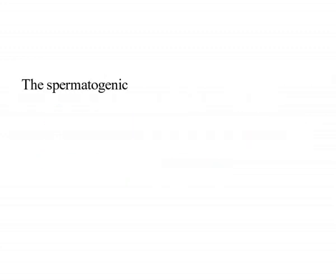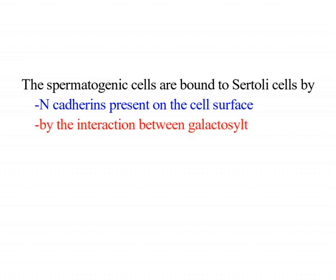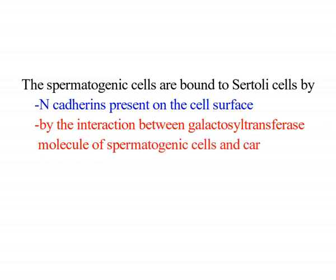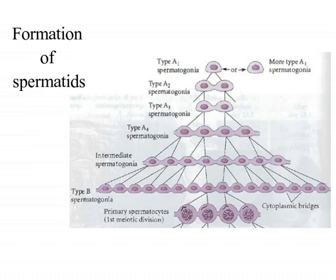The spermatogenic cells are bound to Sertoli cells by N-cadherins present on the cell surface and by the interaction between galactosyltransferase molecules of the spermatogenic cells and the carbohydrate receptors present on the Sertoli cells.